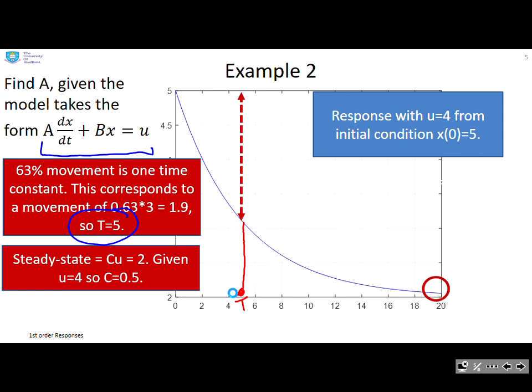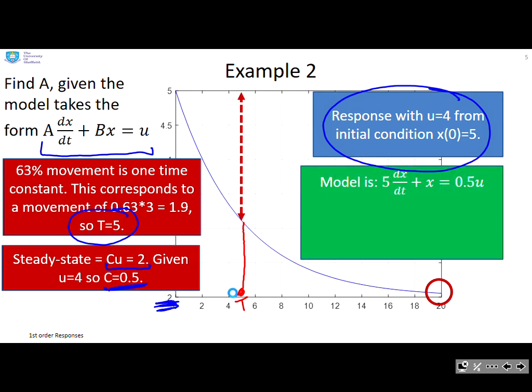Next I look at the steady state, which is 2, and I know that the steady state is given by c times u. I'm given in the question that u equals 4. So if u equals 4 and cu equals 2, then c must be 0.5. I can now derive my model in time constant form: 5 dx/dt plus x equals 0.5u. Now translate that back into the form the question asked. If I rearrange that into the desired format, I get 5 over 0.5 dx/dt plus 1 over 0.5x equals u, and therefore capital A equals 10.